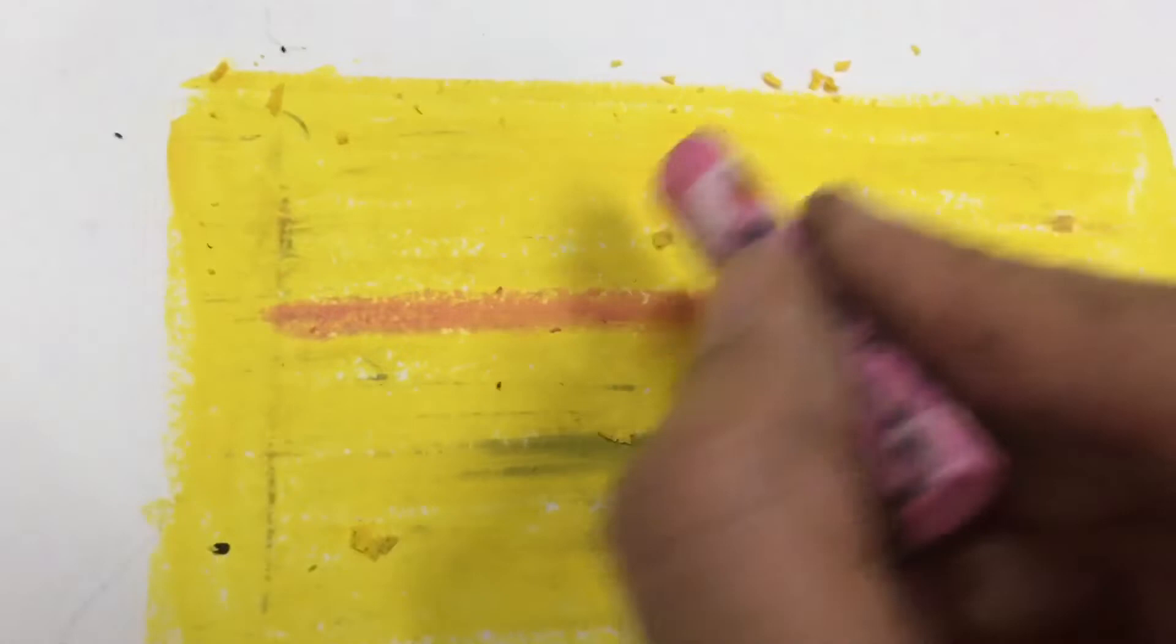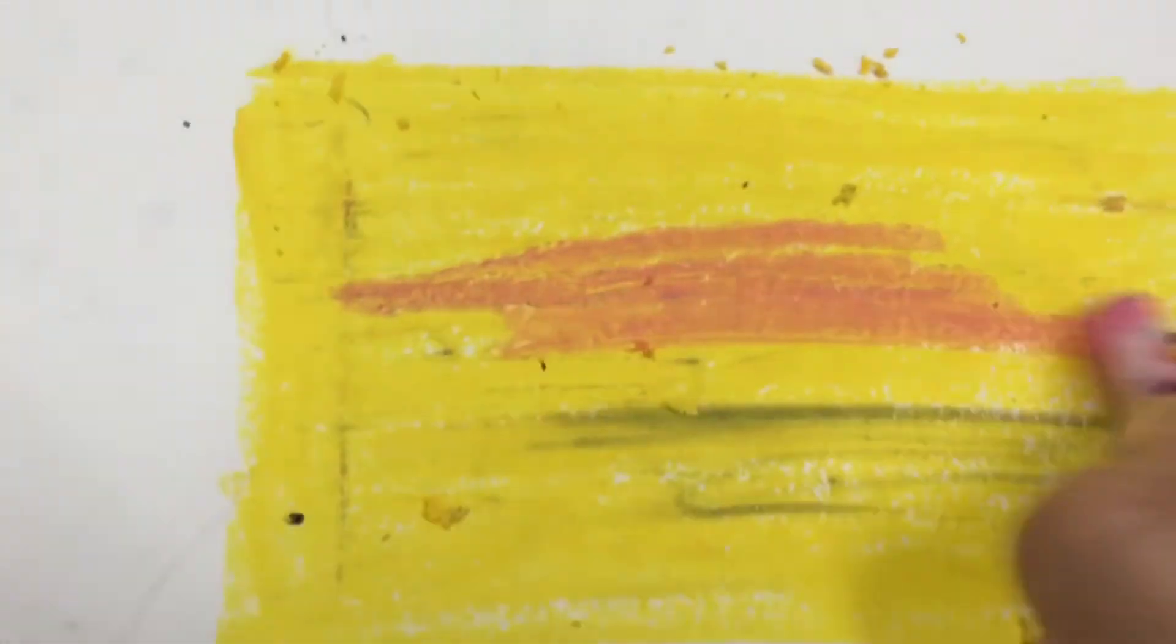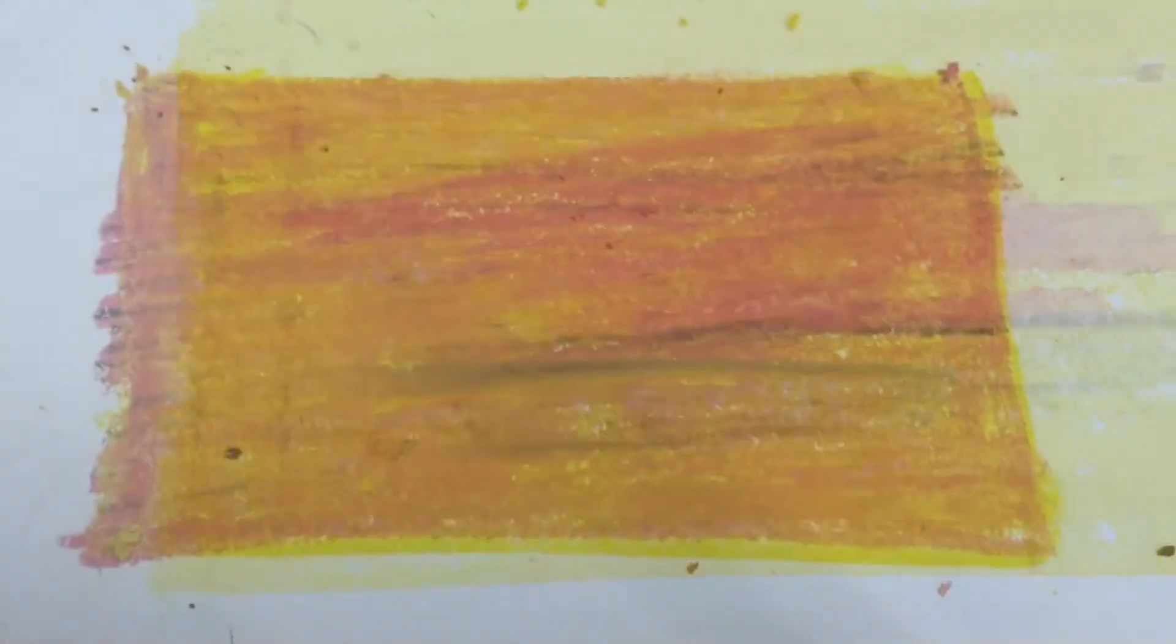So here I have done a layer of yellow and on that I am going another layer. So we have two layers of colors.